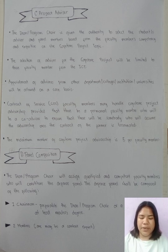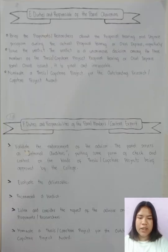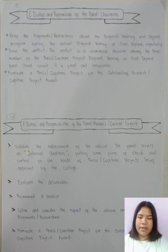Panel Composition: The Dean or Program Chair will assign qualified and competent faculty members to constitute the defense panel. The panel shall be composed of: (1) Chairman — preferably the dean or program chair, or a faculty member with at least a master's degree; and (2) Members — who may include a content expert. The verdict is the unanimous decision among the three members of the panel. Once issued, it is final and irrevocable.